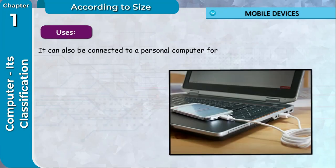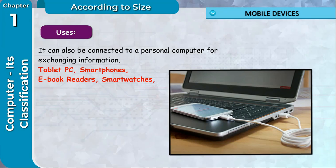Speed of mobile device is increasing day by day. Uses: It can also be connected to a personal computer for exchanging information. Tablet PC, smartphones, ebook readers, smart watches, digital camera and game console are the types of mobile devices.